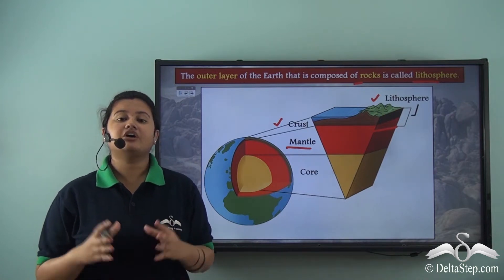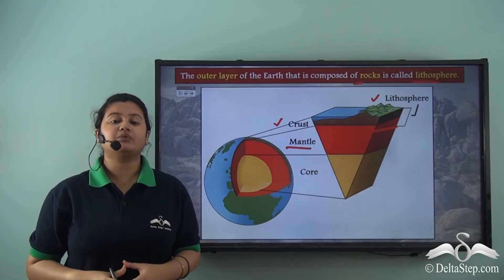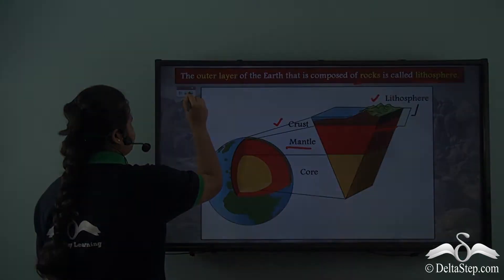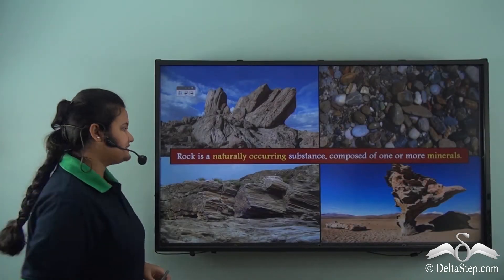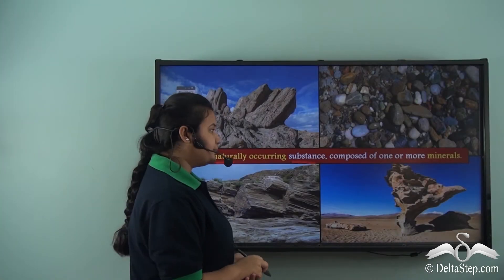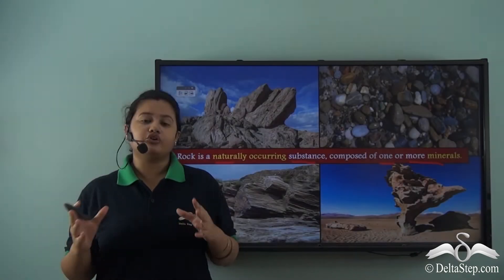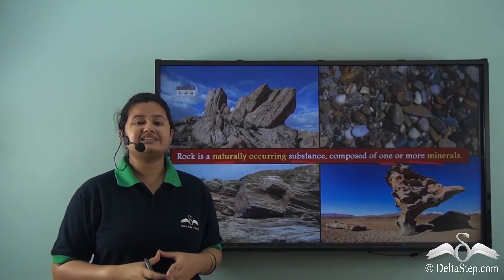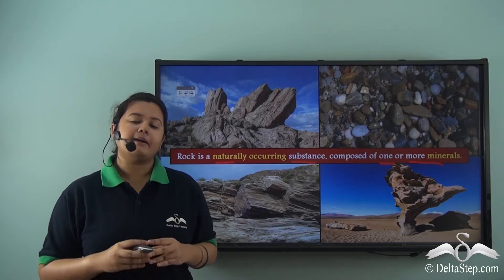Thus the outer shell of the earth that is composed of hard rocks is called the lithosphere, and rocks occur naturally on the earth's surface. So what is a rock? A rock is a naturally occurring substance that is composed of one or more minerals. Rocks occur naturally on the earth's surface and they are composed of solid crystals of minerals.